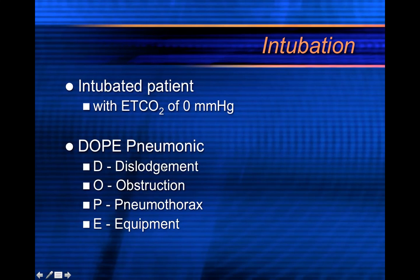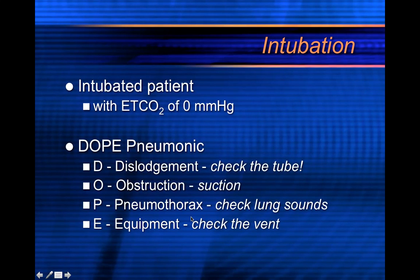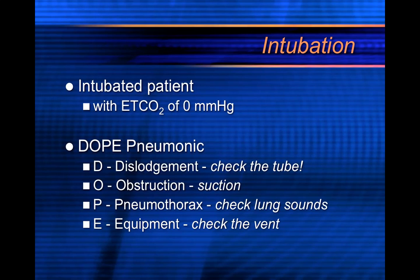The tube should be the first thing you check, not the last. Check if it's become dislodged — do that with lung sounds and by visualizing the tube again. See if there's an obstruction and try suctioning down the tube. Listen to lung sounds again for pneumothorax; look for symmetrical chest rise and fall and check for all signs of pneumothorax, especially if it was a trauma patient.